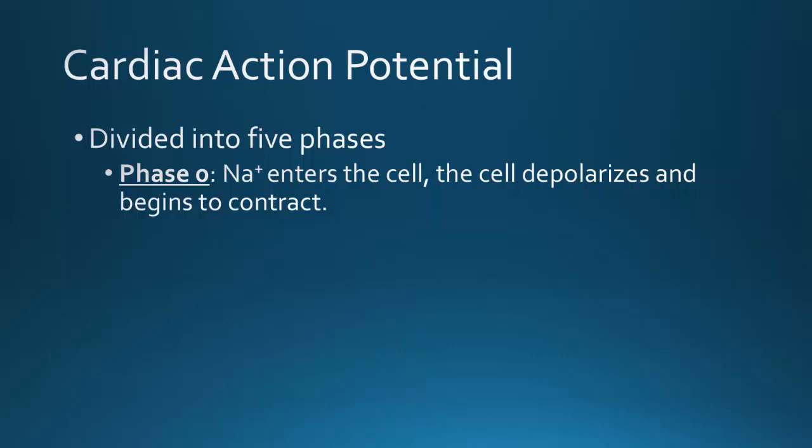At that point the threshold is reached and the cell is stimulated. Calcium moves slowly through calcium channels, and the influx of calcium causes the sarcoplasmic reticulum to release calcium for muscle contraction. The cell depolarizes and begins to contract. On an ECG, the QRS complex — the actual ventricular contraction — indicates phase zero.